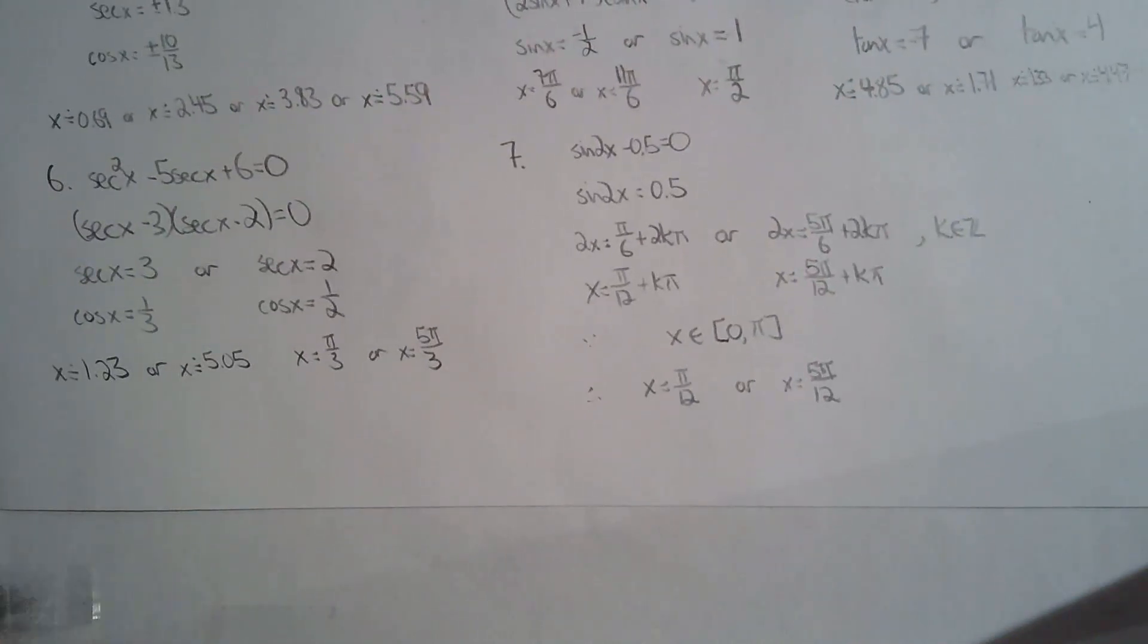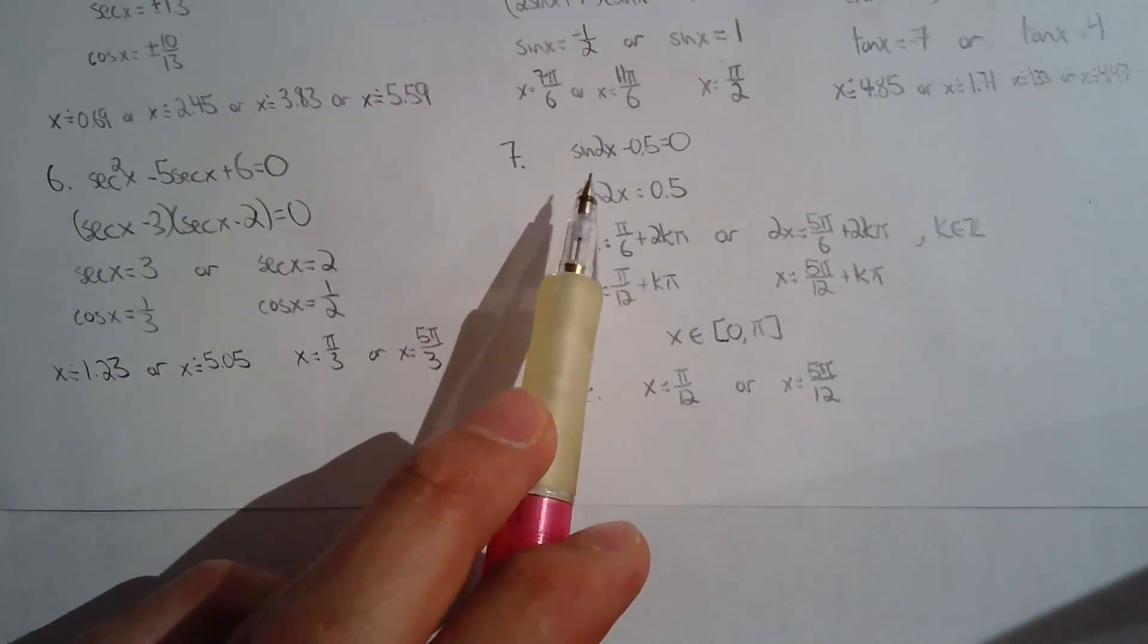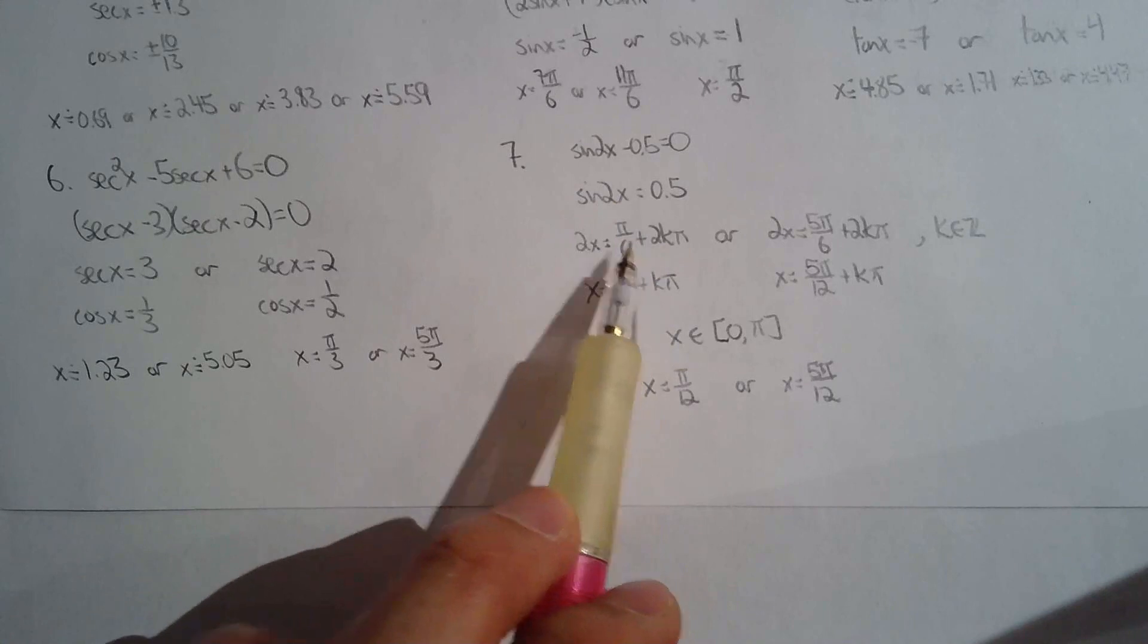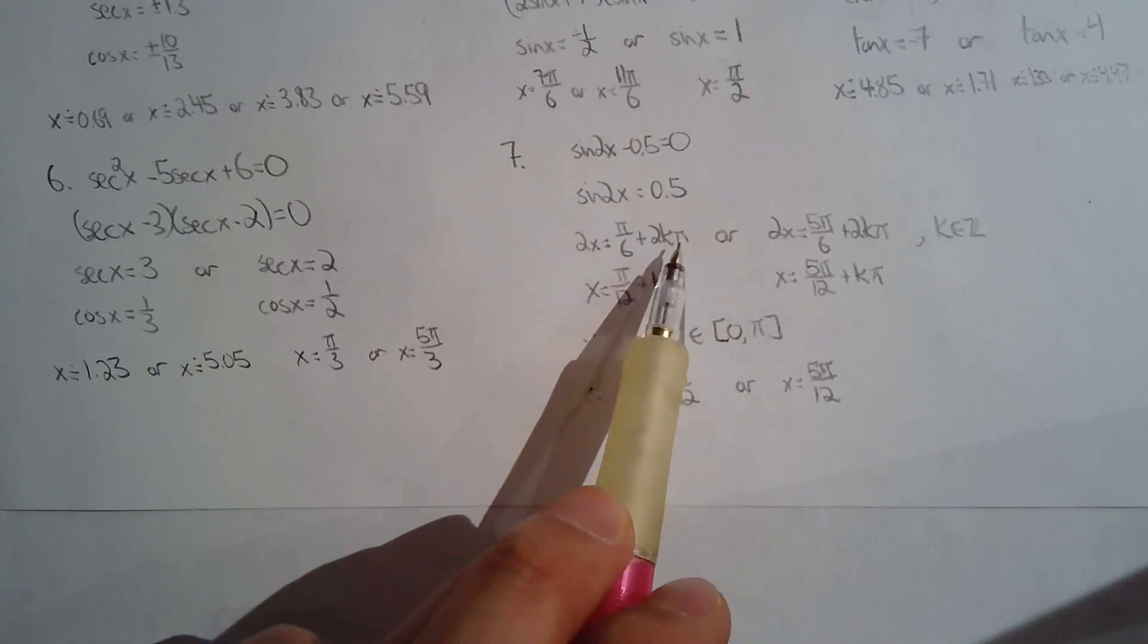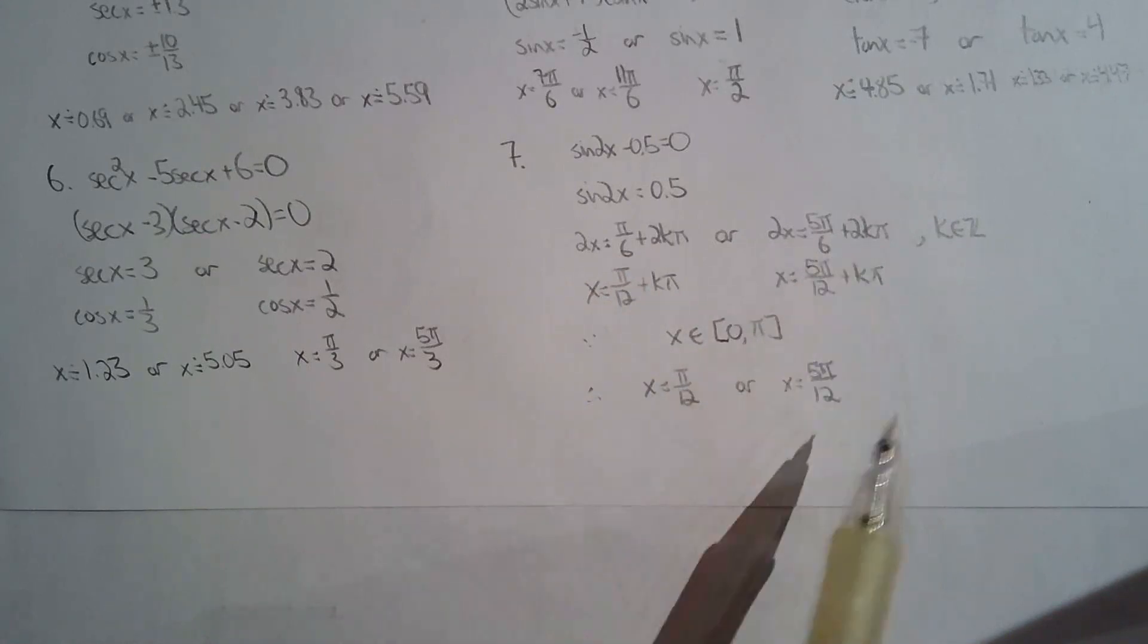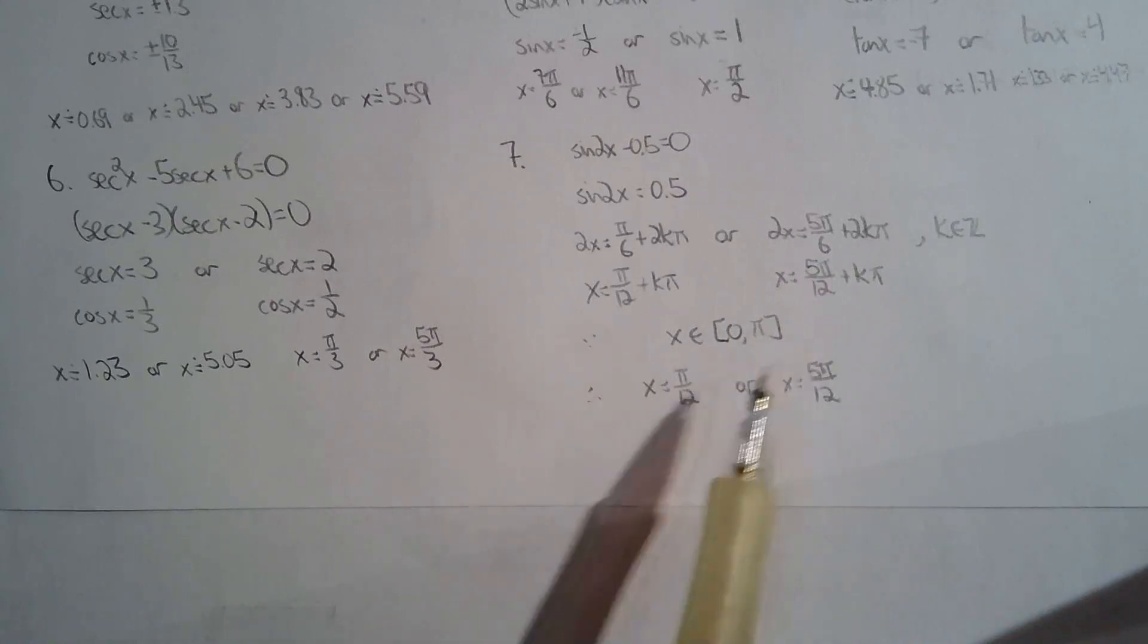Number seven is sine 2x minus 0.5. Once I saw the 2x, I'm thinking coterminal angles. So 2x could be pi over six or any angle coterminal to it, and five pi over six or any angle coterminal to that. Now divide both sides by two to solve for x. You might be thinking you should have gotten four answers, but there are only two answers because x was restricted from zero to pi, so we can only take pi over twelve and five pi over twelve. But if this restriction was zero to two pi, which it usually is, then you would get four answers.